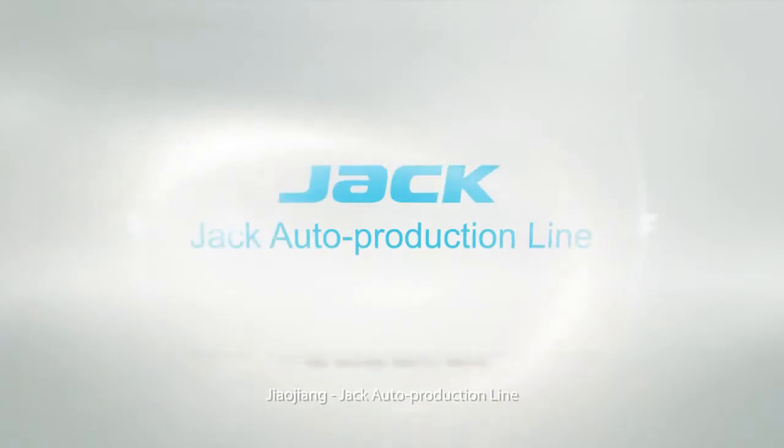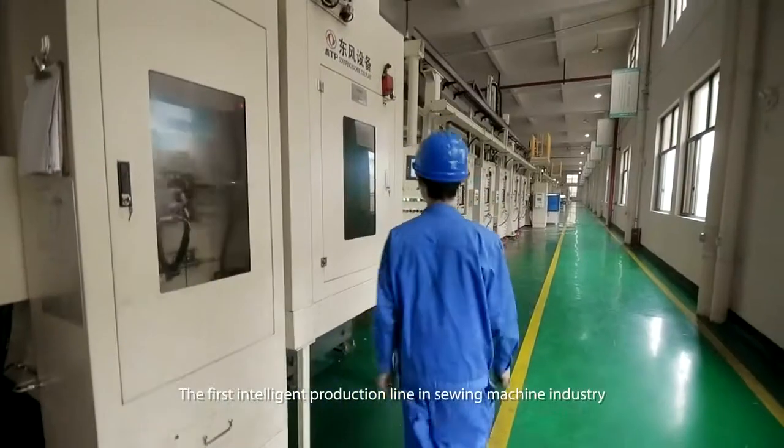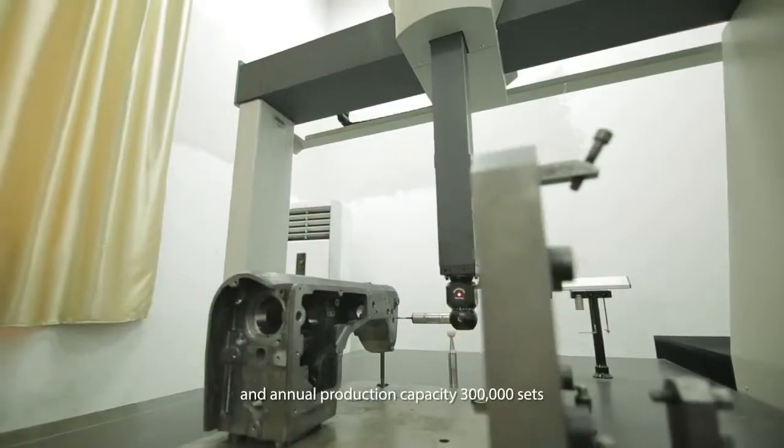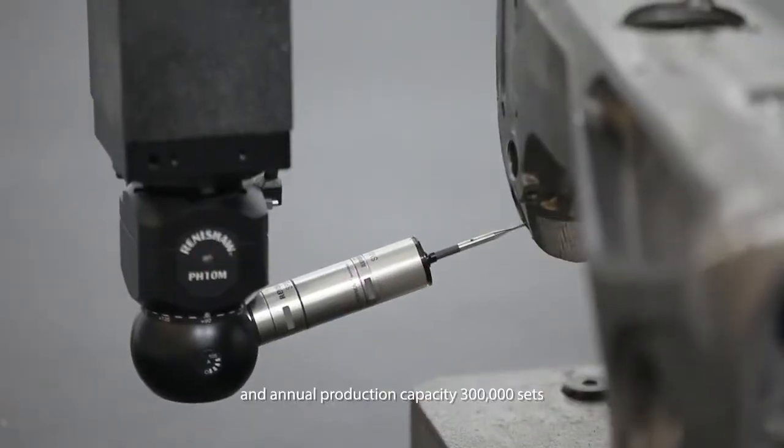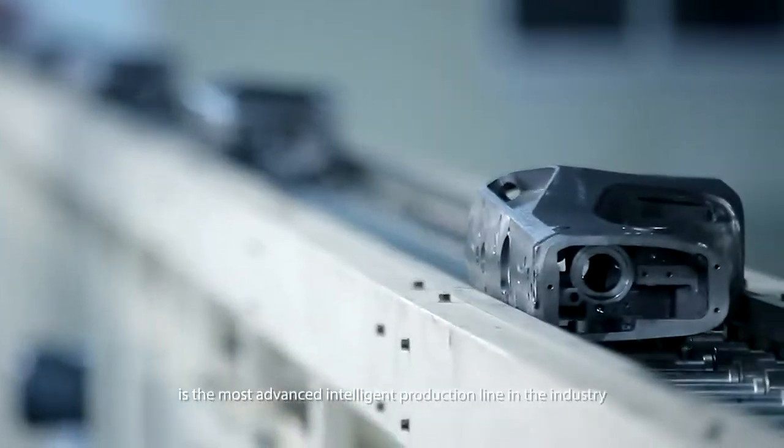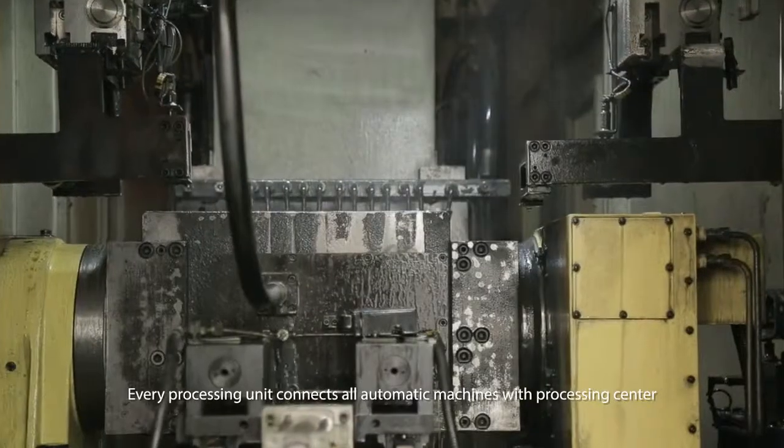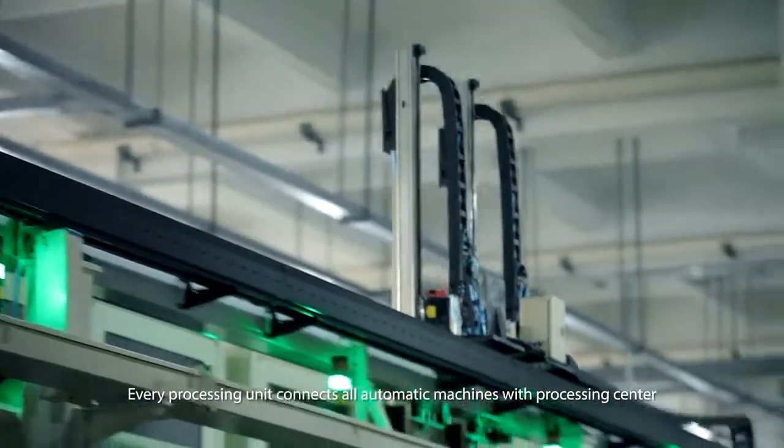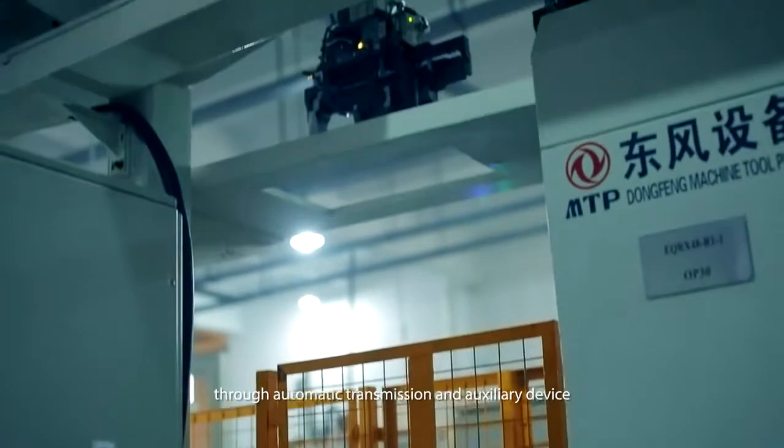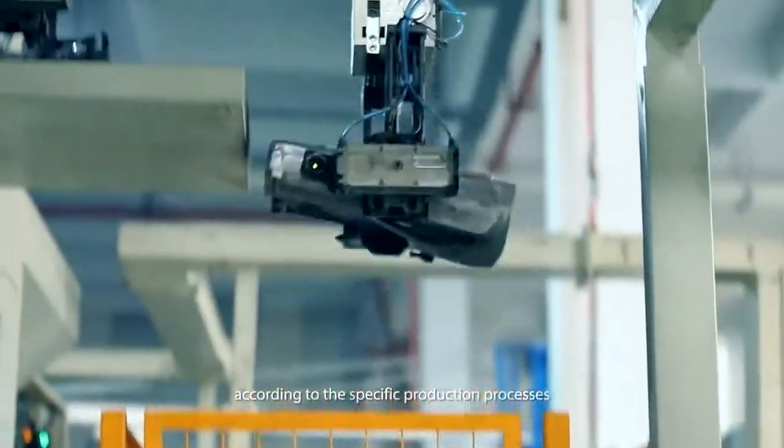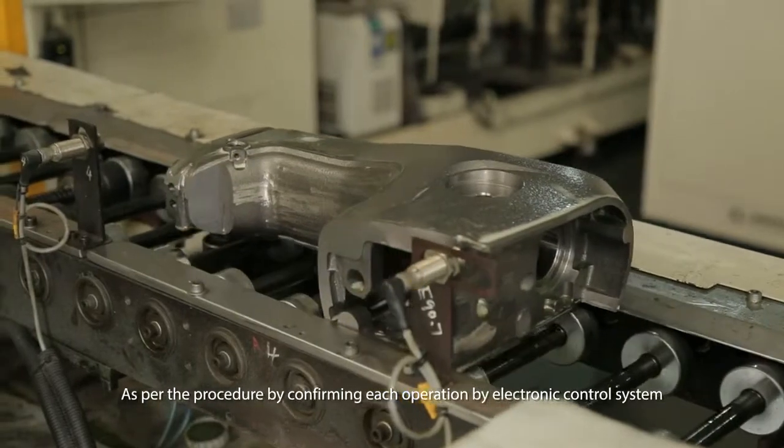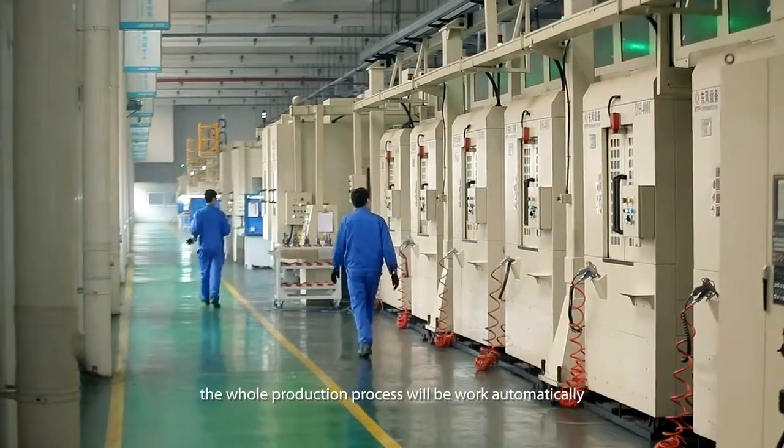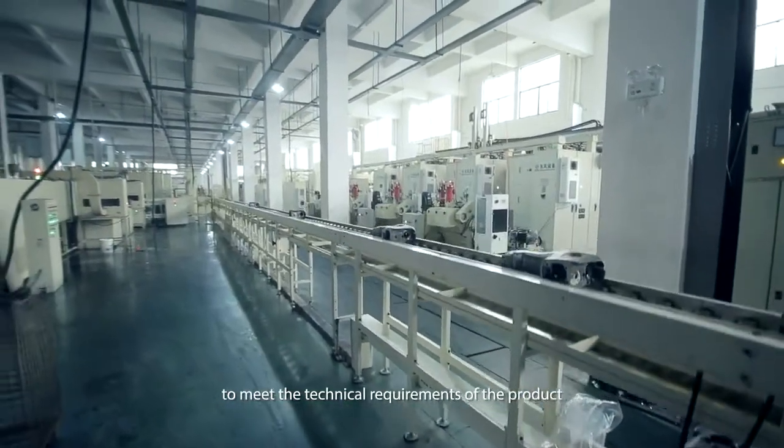Jiaojian Jack Auto Production Line, the first intelligent production line in Sui machine industry. With a total investment of $20 million and annual production capacity 300,000 sets, is the most advanced intelligent production line in the industry. Every processing unit connects all automatic machines with processing center through automatic transmission and auxiliary device according to the specific production processes. By confirming each operation by electronic control system, the whole production process will work automatically to meet the technical requirements of the product.